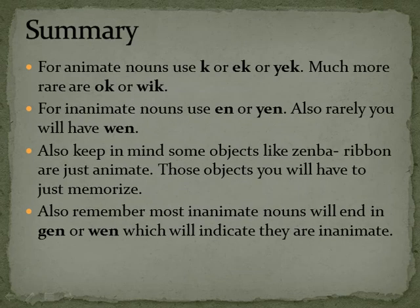Summary. For animate nouns, use -K, -EK, or -YEK. Much more rare are -OK or -WIK. For inanimate nouns, use -EN or -YEN. Also rarely you'll have -WEN. Keep in mind that some objects like zinba, ribbon, are just animate — these you'll have to memorize. Also remember most inanimate nouns will end in -gen or -wun, which will help indicate that they're inanimate.